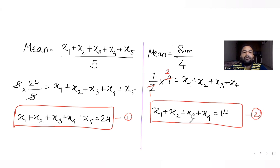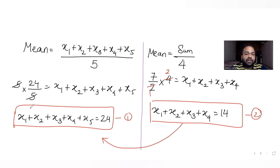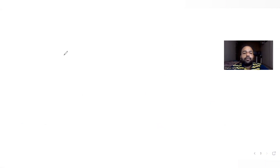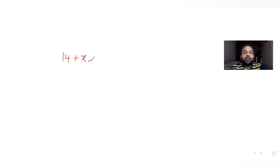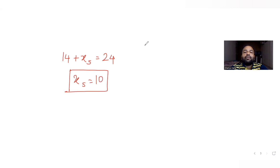Using equation 2 in equation 1, we put the sum of first 4 observations as 14. We get 14 plus x5 equals 24, so the value of the fifth observation becomes 24 minus 14, which is 10. So x5 equals 10.